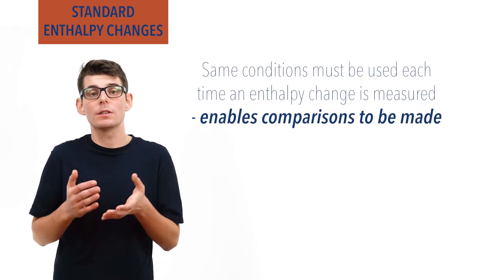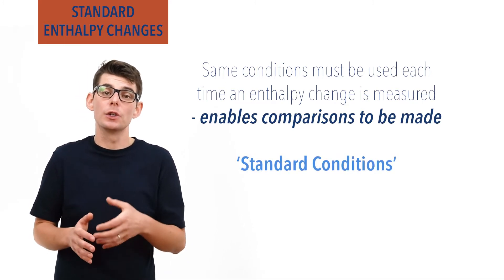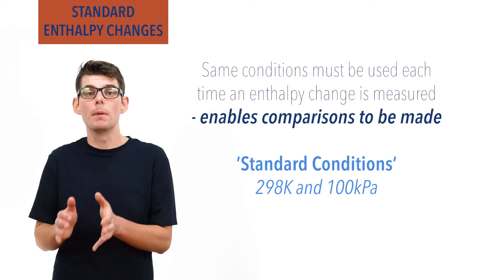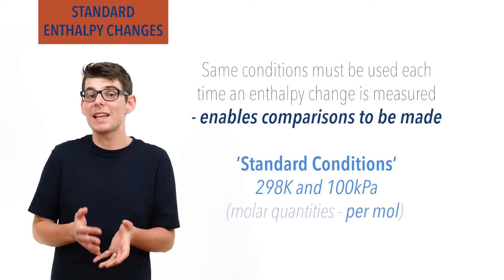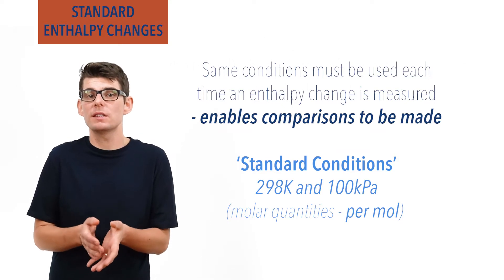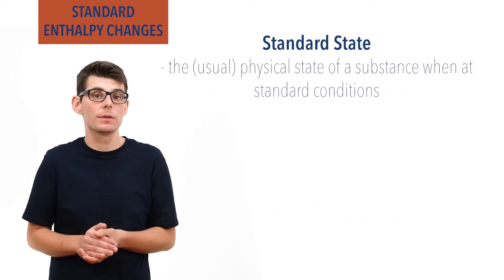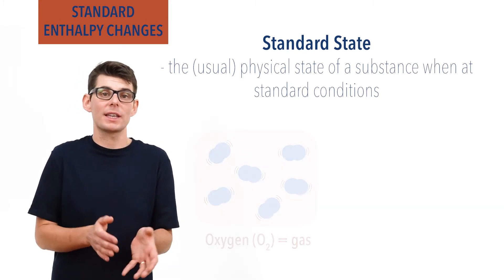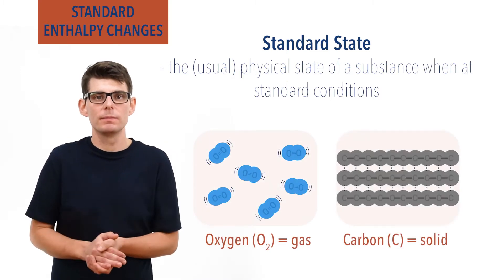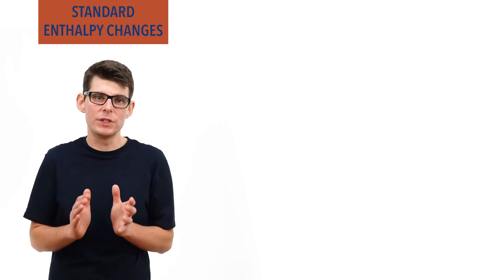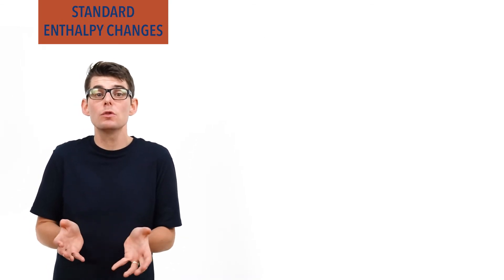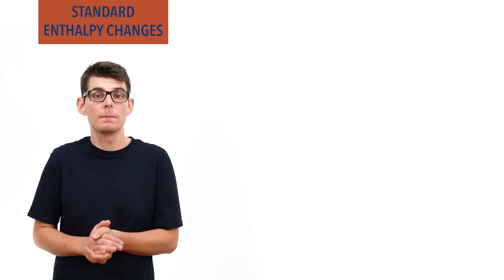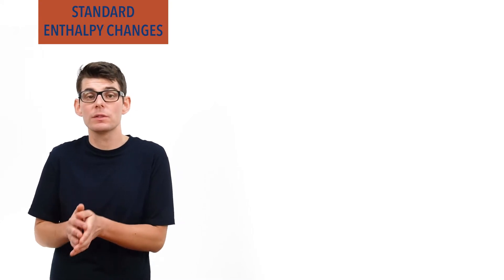The conditions used are referred to as standard conditions, and are usually 298 Kelvin and 100 kilopascals of pressure. All amounts are per mole. You may come across the term standard states. This just means the physical state of a substance when it is at standard conditions. For example, at 298 Kelvin and 100 kilopascals of pressure, oxygen is a gas, and carbon graphite is a solid. There are a huge number of different possible reactions in chemistry, between an almost infinite number of compounds. Many of these reactions fall into certain categories though, and enthalpy changes for similar types of reactions have specific names. These are referred to as standard enthalpy changes.